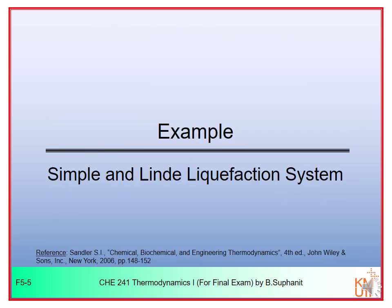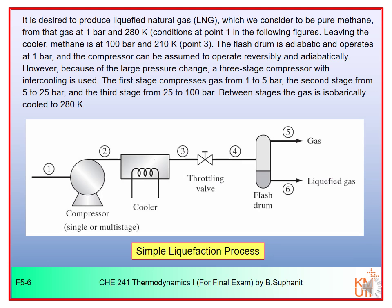Let's look at an example of the simple and Linde liquefaction processes. We are going to produce liquefied natural gas (LNG). Normally LNG is not pure, but we simplify by assuming pure methane. The methane starts at 1 bar and 280 Kelvin — point one — and leaves the cooler at 100 bar and 210 Kelvin, which is point three.